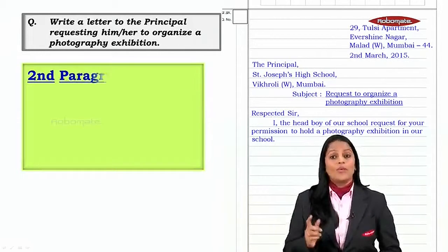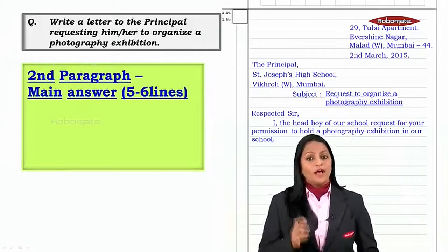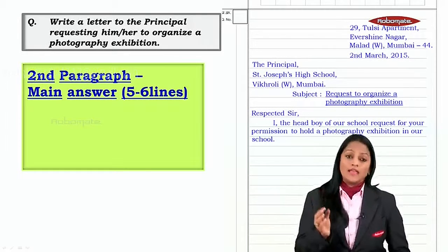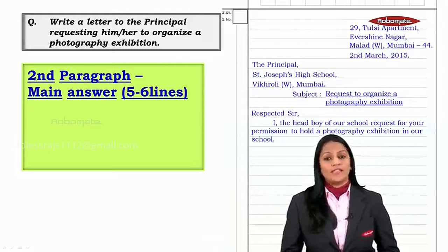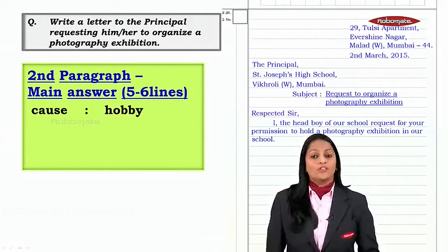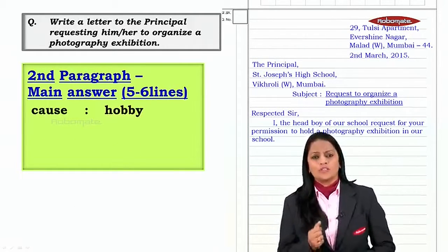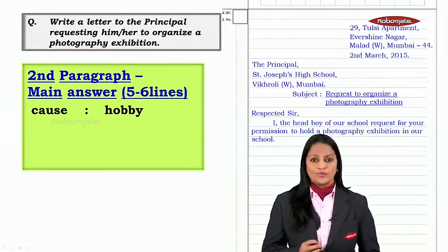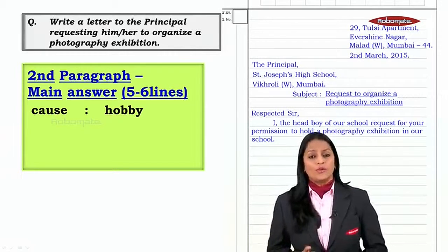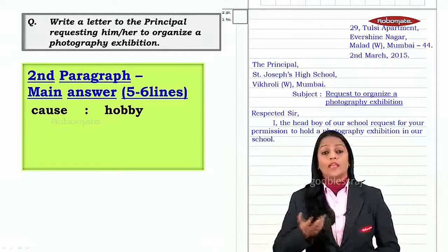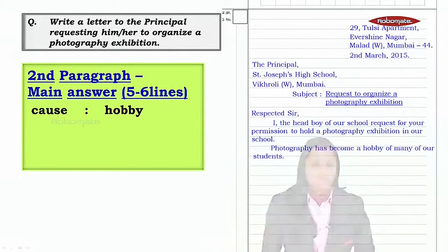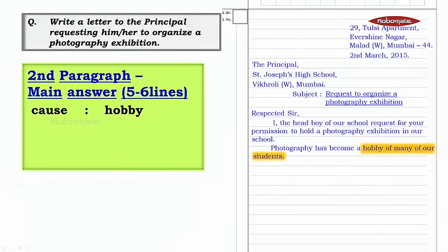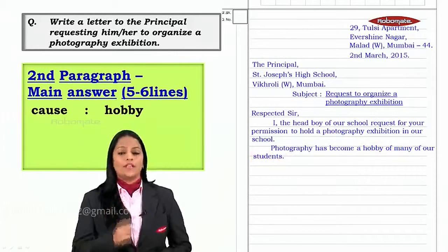Let us now go on with the second paragraph. This is the main answer and you will write about five to six lines with the help of the three parameters. The first one — what could be the cause of holding this exhibition? The cause is that photography has become a hobby of many of our students, and many students are following it now. That's your first line showing the cause of the request.